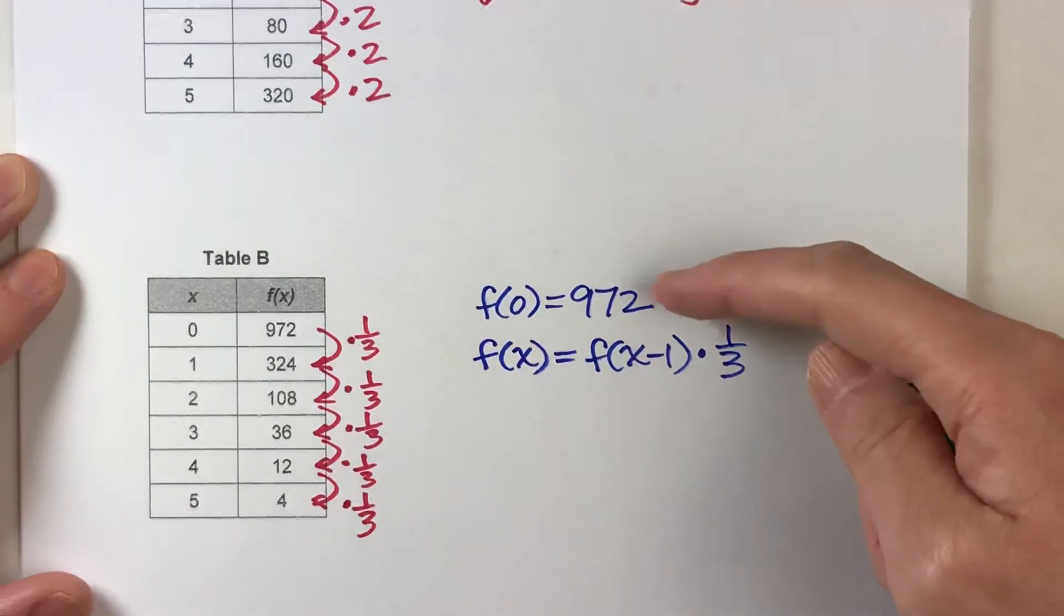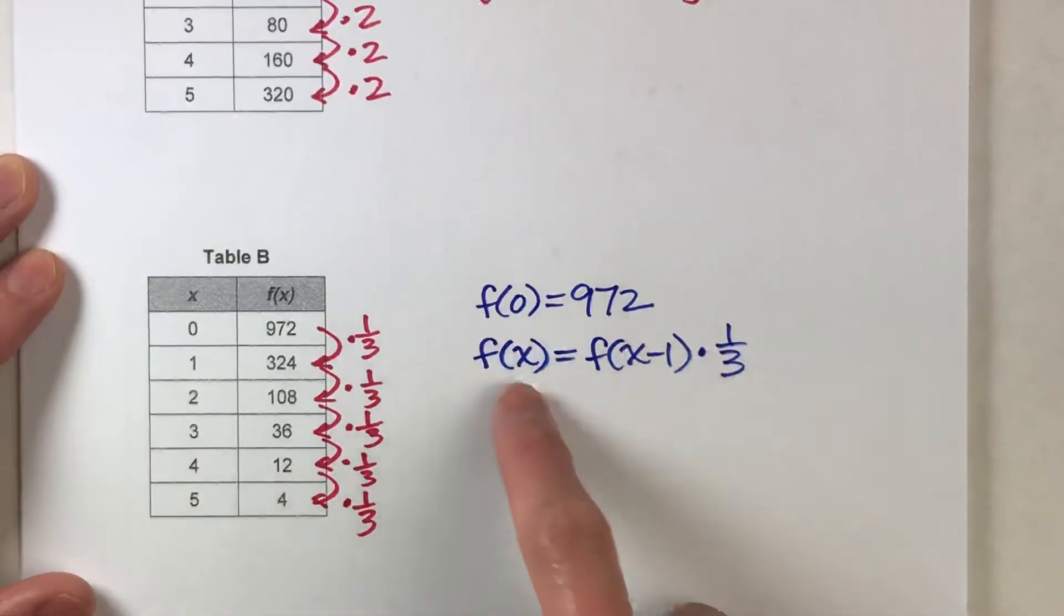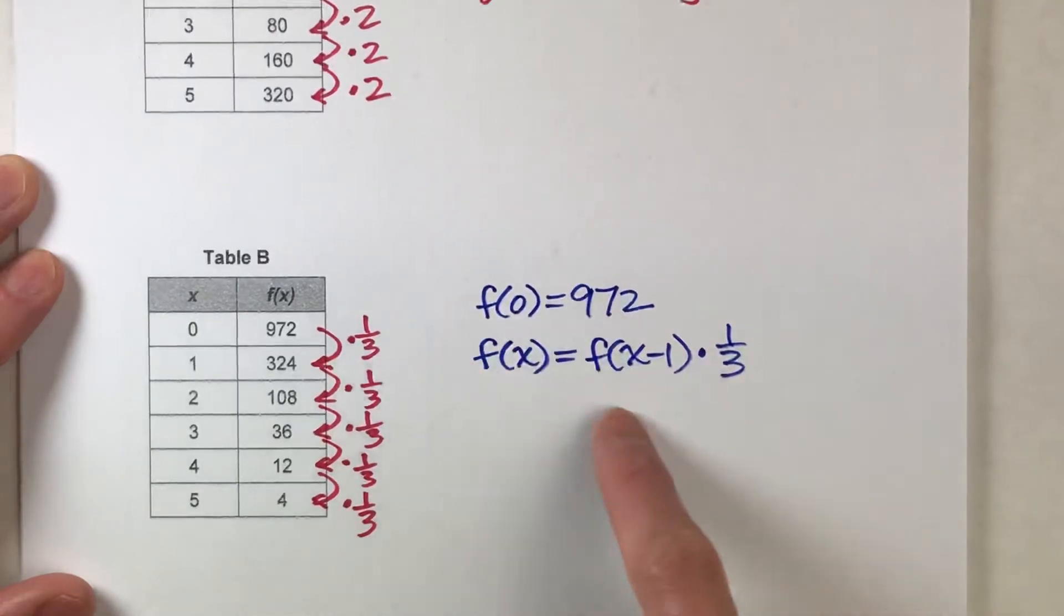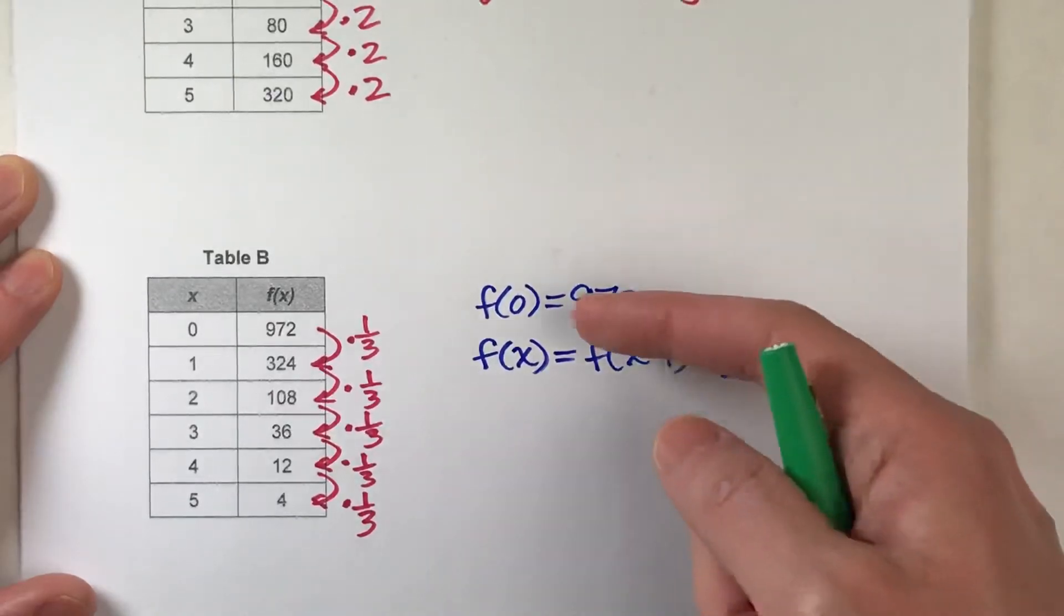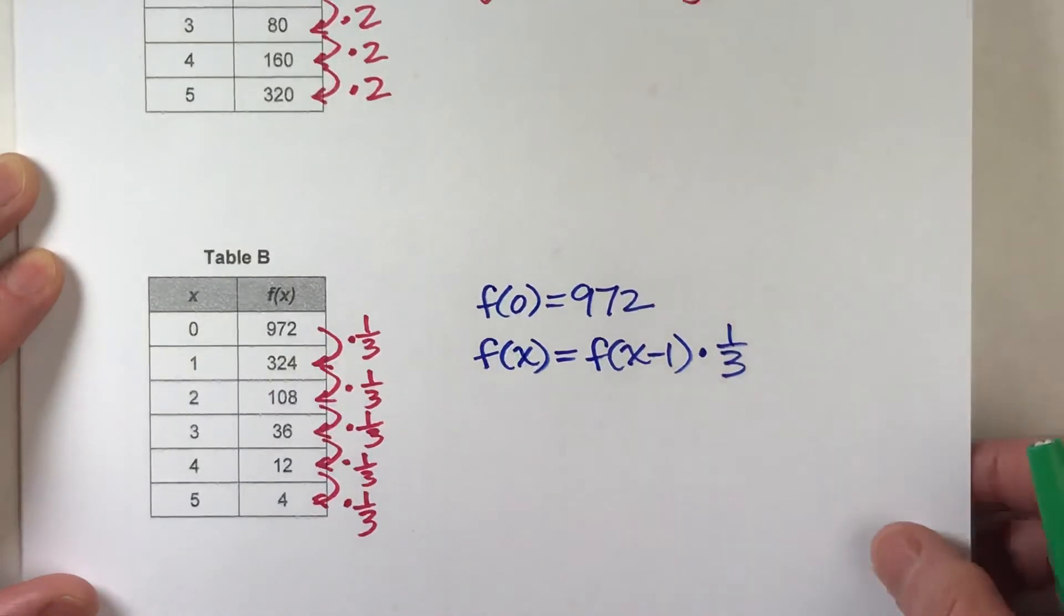So, again, we have to state where we started at, and then we have to state what the pattern is. And notice, this will describe to anyone this entire table because it tells you where to start the table and tells you how to find the next value based on knowing the previous one.